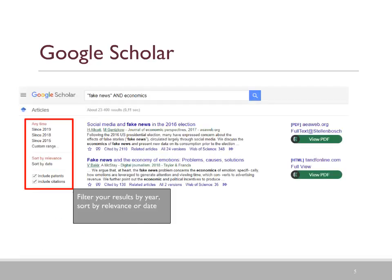Using the Advanced Search options with the exact phrase 'Fake News' and the option 'With all the words: Economics,' here are the research results. As you can see, 'Fake News' is combined with 'Economics,' and the Boolean operator AND is used.